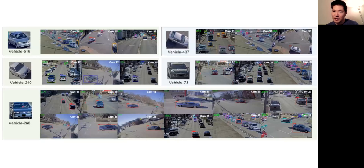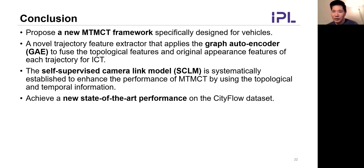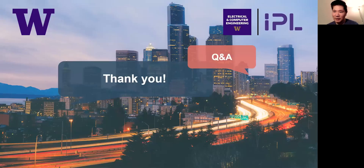Here is the qualitative result of the proposed method. In conclusion, first, we propose a new MTMCT framework especially designed for vehicles. Second, we utilize a novel graph autoencoder to construct more robust features for inter-camera tracking. Third, we create a self-supervised camera link model using spatial-temporal constraints to reduce the solution space for cross-camera vehicle re-identification. Finally, we achieve new state-of-the-art performance on the CityFlow dataset. Thank you.